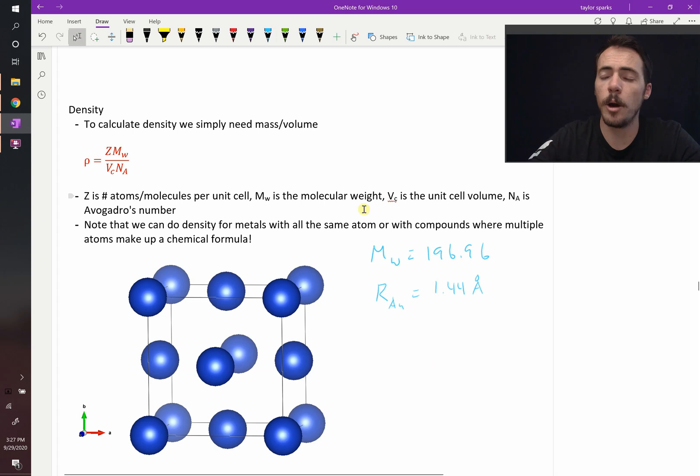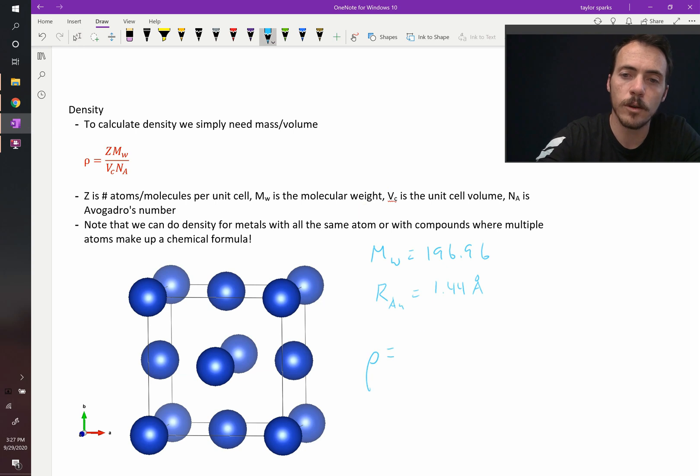So let's go ahead and plug this in. How many atoms are there per unit cell for an FCC lattice? There are four. So the density is going to be equal to four multiplied by the molecular weight, 196.96 grams per mole. We're going to divide this by the volume.